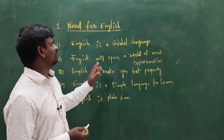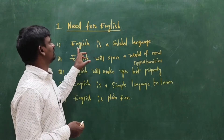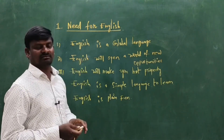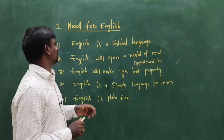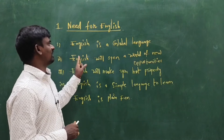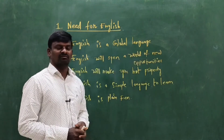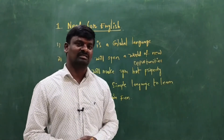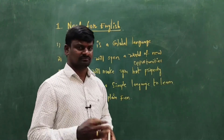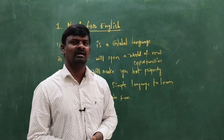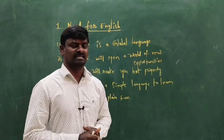Today I am giving you the tips — some important topics on why English is called one of the most spoken languages across the world. Rule number one: English is a global language. Why is English called a global language? In our country, most people communicate in their mother tongue and English is spoken as a second language.